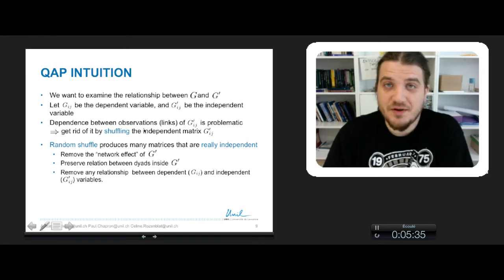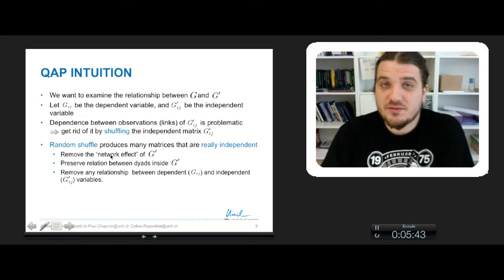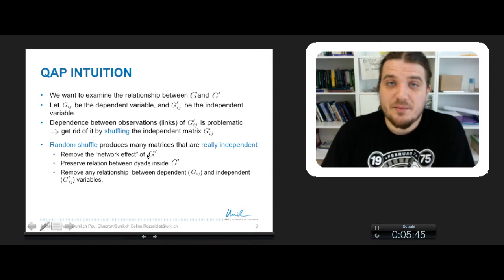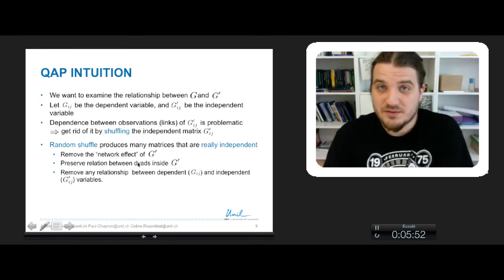We will get rid of it by shuffling the adjacency matrix of the networks. This random shuffling will produce matrices that are really independent. It will remove the network effect of G', and at the same time it will preserve the relation between the dyads inside G', so the neighborhoods are the same even in the shuffled matrix.